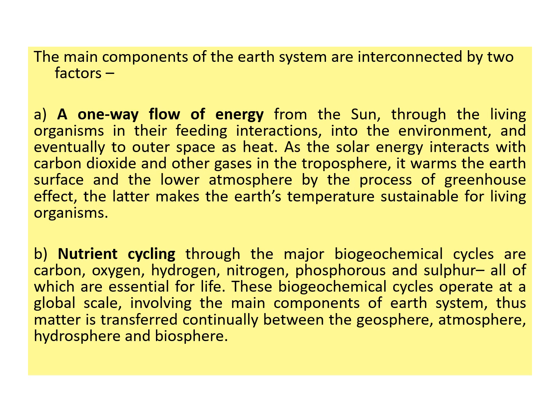Without the greenhouse effect, the Earth would not have been habitable. The second interconnecting factor is nutrient cycling — the process through which the major biogeochemical cycles occur: the carbon, oxygen, hydrogen, nitrogen, phosphorus, and sulfur cycles, all of which are essential for life. These biogeochemical cycles operate on a global scale and involve all the main components of the Earth system, so matter is continuously transferred between all four spheres.